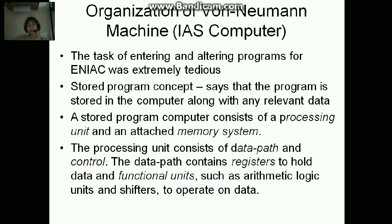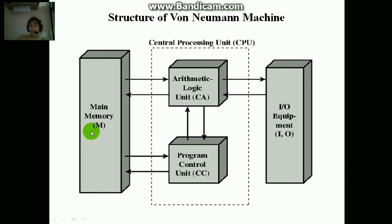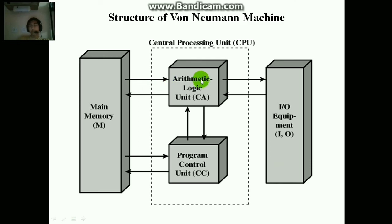The stored program concept says that the program stored in the computer is stored along with some relevant data. It has three parts: the main memory, the CPU, and the input/output equipment. The program counter contains the address of the next instruction, which is stored in main memory, and then commands are sent to the arithmetic logic unit.